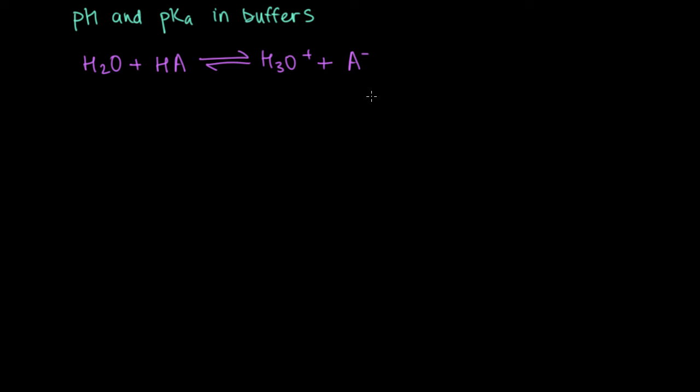This is, as written, the acid dissociation reaction for HA, and since it's in equilibrium, we can write an expression called Ka, which is just the equilibrium constant for this equation. And it just has a special name because it happens to be for the dissociation of an acid.